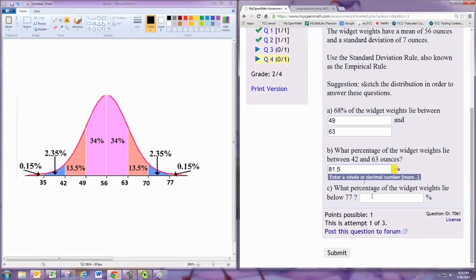81.5 percent. And then below 77, you can see below 77 is almost everything. Remember, the total is a hundred percent.